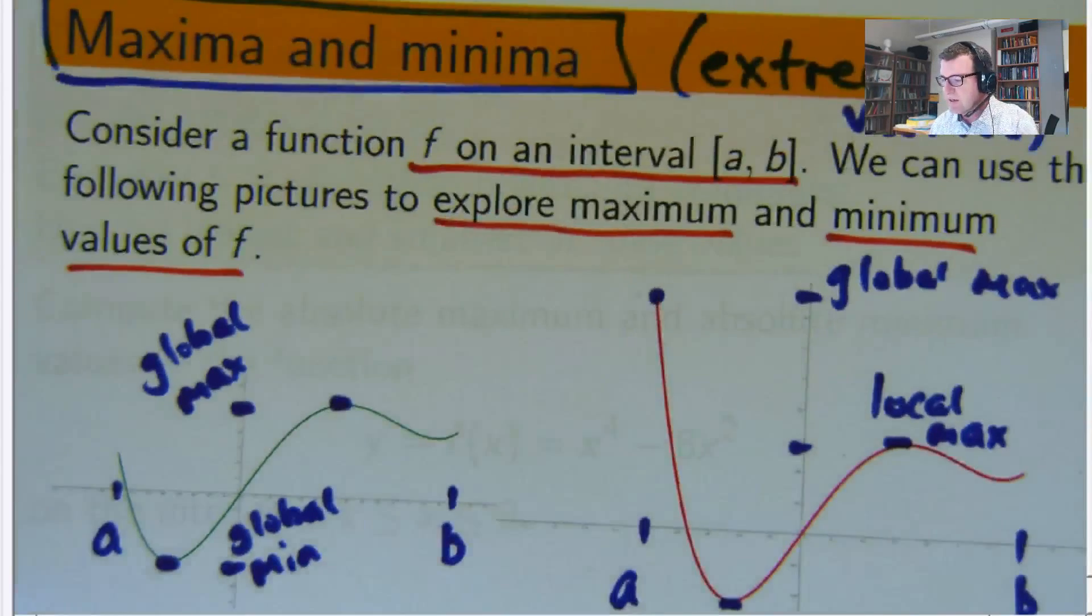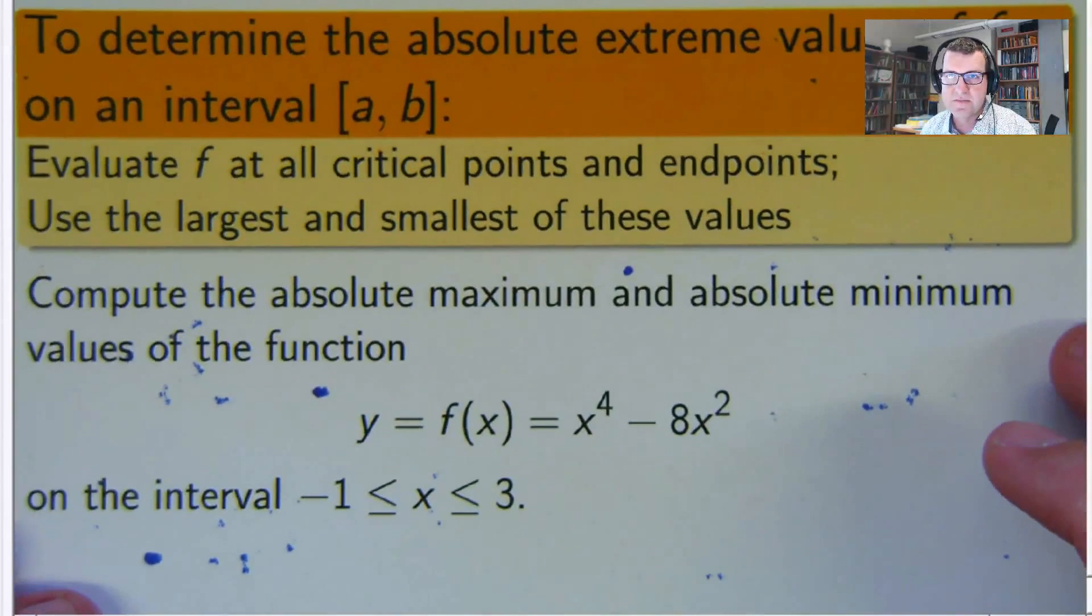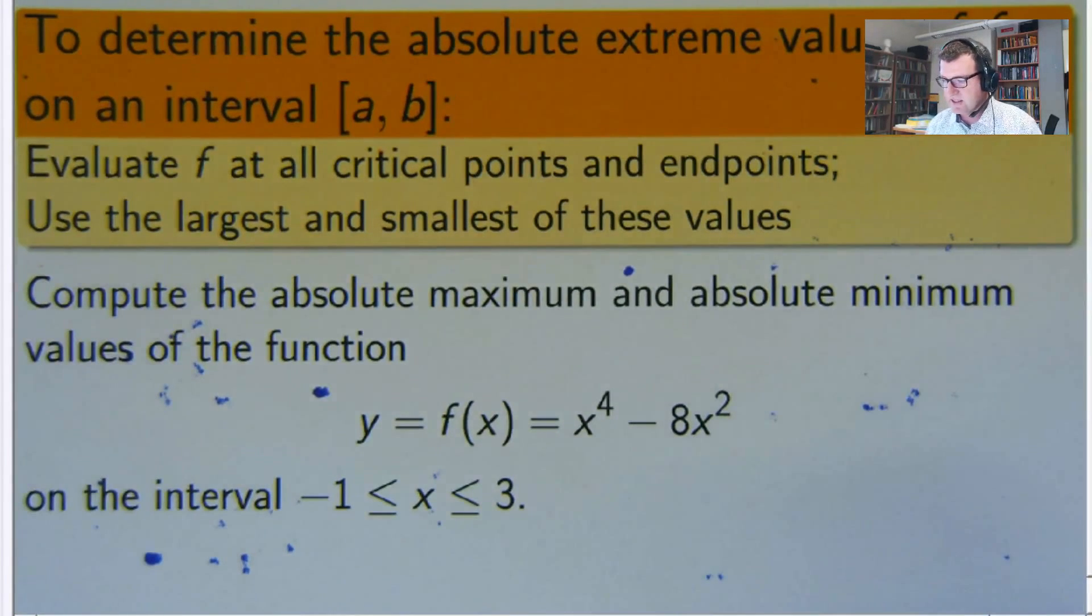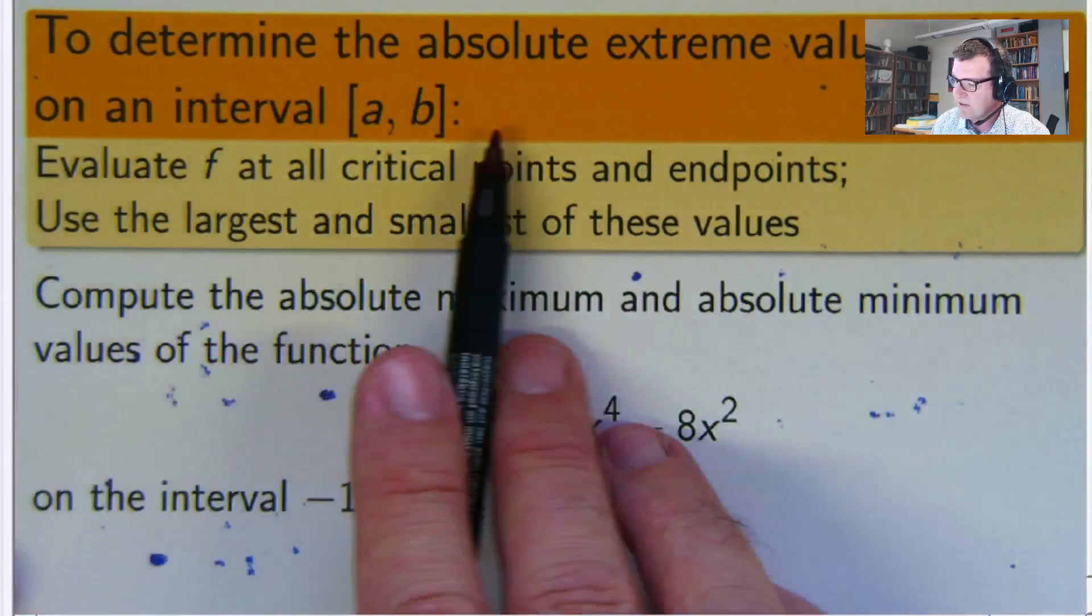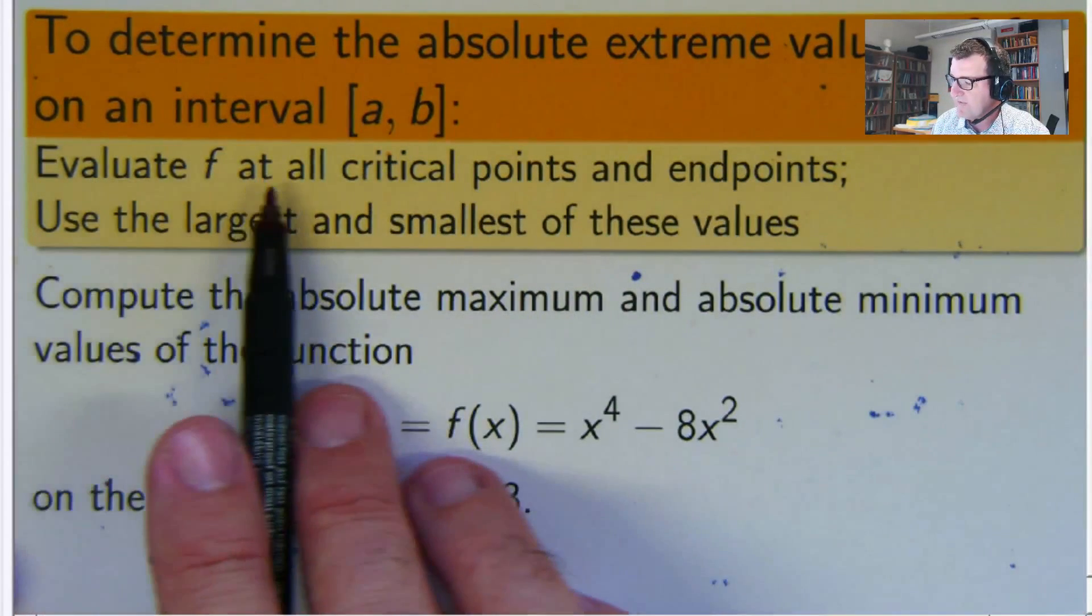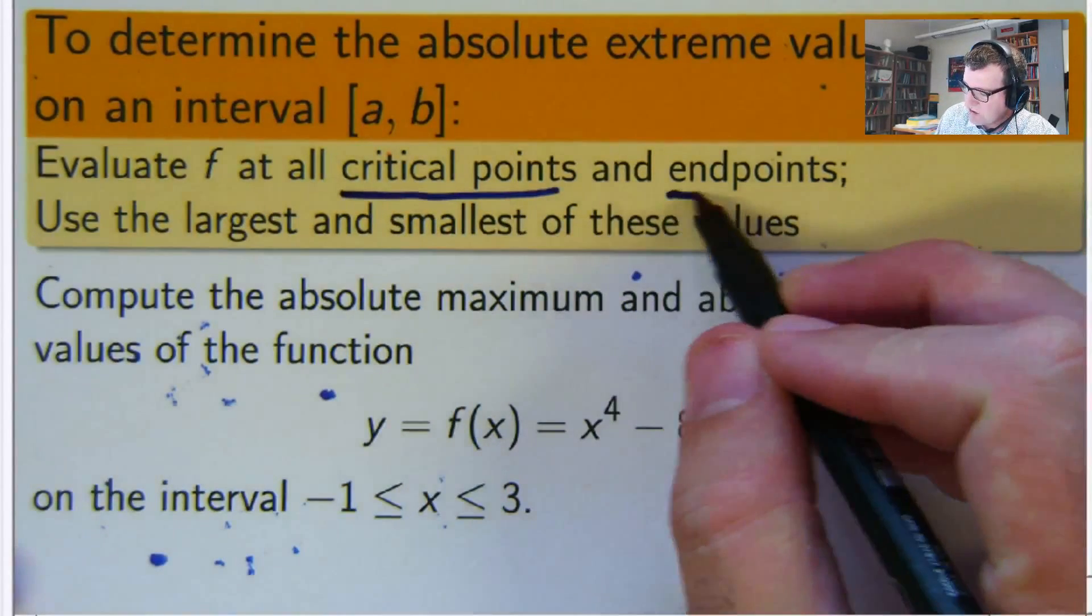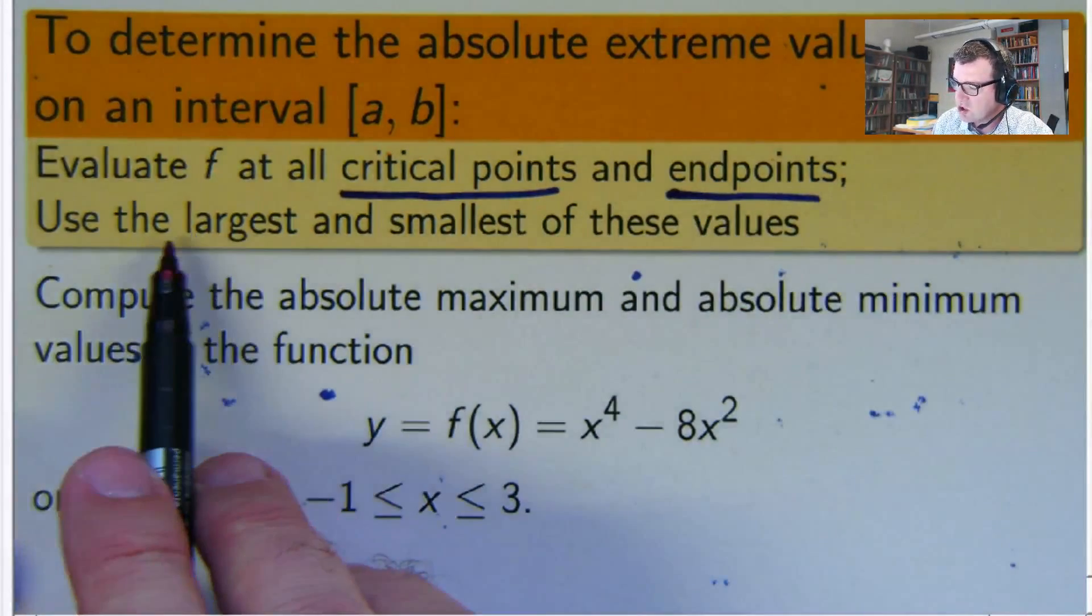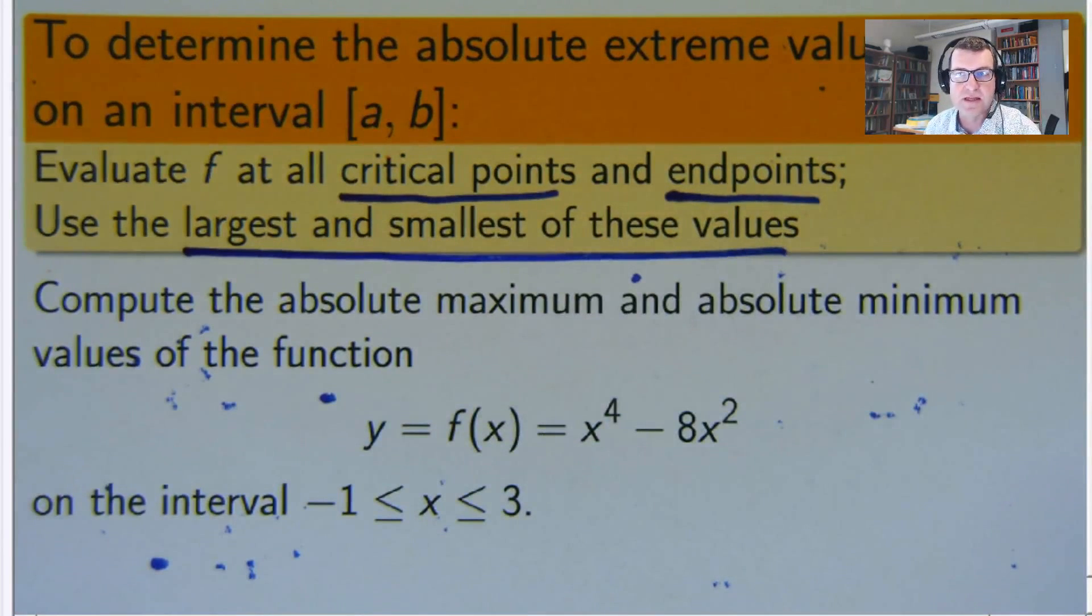Let's do an example and see if we can put some concreteness into this. A little bit of advice: to determine the absolute extreme values of f on this interval, evaluate f at all the critical points and the endpoints of the interval. Then you just choose the largest and the smallest of these values. The largest will be the maximum, the smallest will be the minimum.